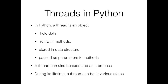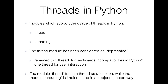In Python, a thread is an object like any other object that can hold data. This object can be used to run methods, can be stored in data structures, and can be passed as a parameter to methods. In Python, a thread can also be executed as a process, and during the lifetime of a thread it can have various states.